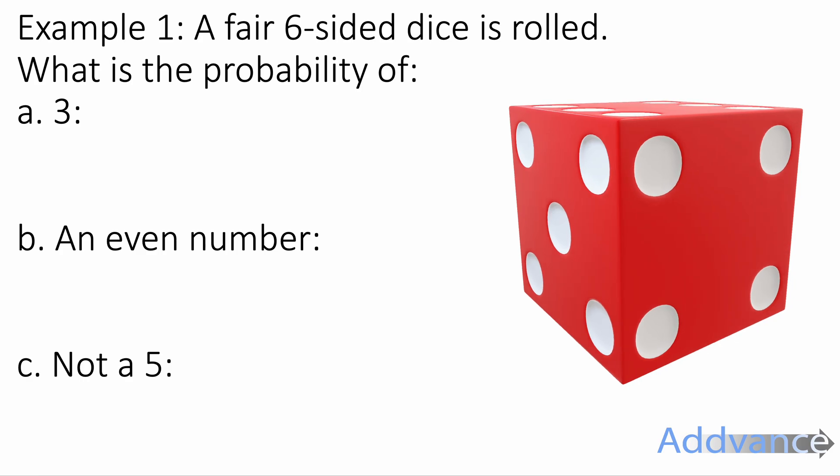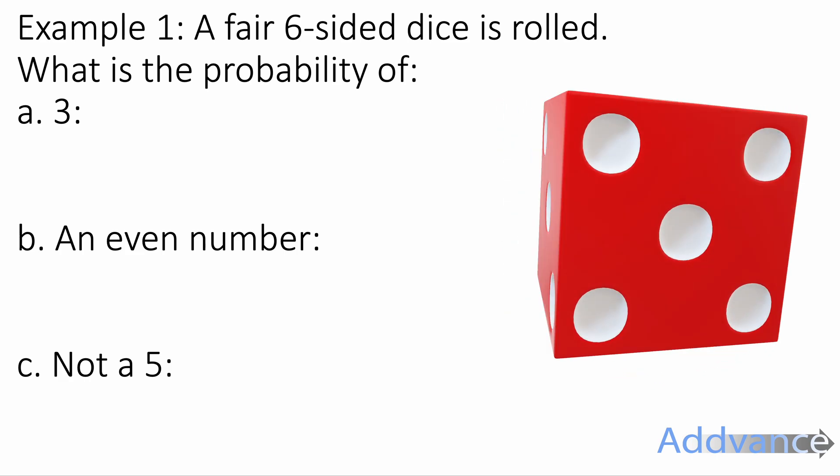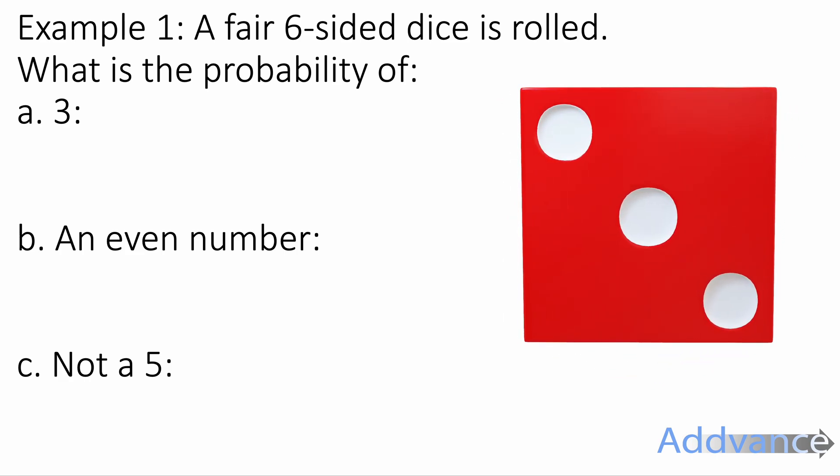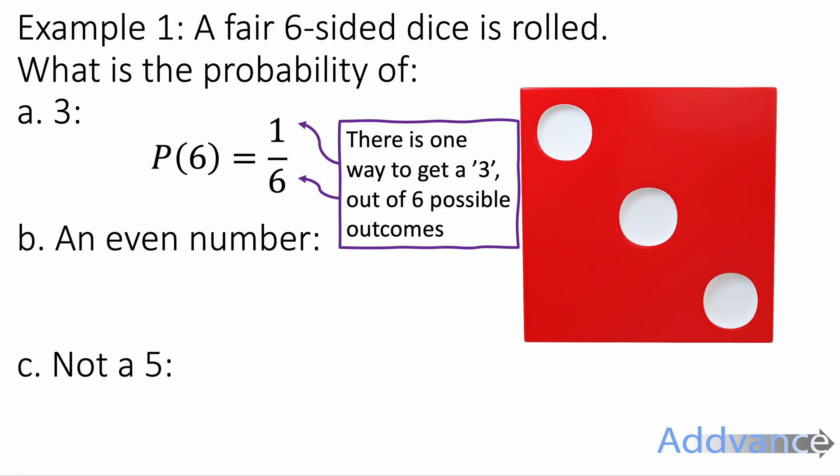Let's look at some examples of exam-style questions on this. A fair six-sided dice is rolled. What is the probability of getting a 3? There is one 3 on a dice out of 6 possible sides. That is a 1 out of 6 probability and we write it as a fraction. There's one way of getting a 3 out of 6 possible outcomes, so it's 1 out of 6.